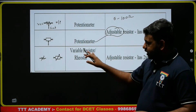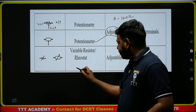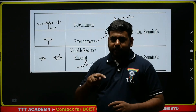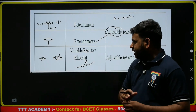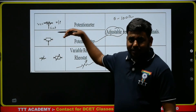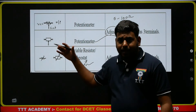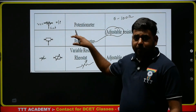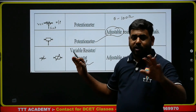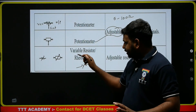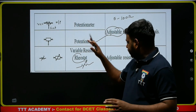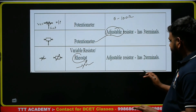Next, variable resistor — the variable resistor symbol is a resistor with an arrow mark. It is also called a rheostat, and it has only two terminals. The main difference between potentiometer and rheostat: potentiometer is used in low-power applications, for example in electronic devices; rheostat is used in high-power applications. So, potentiometer is a variable resistor used for low power, while a rheostat is for high power.